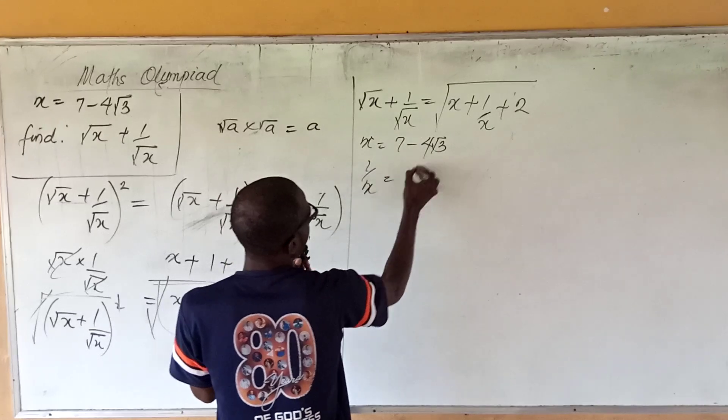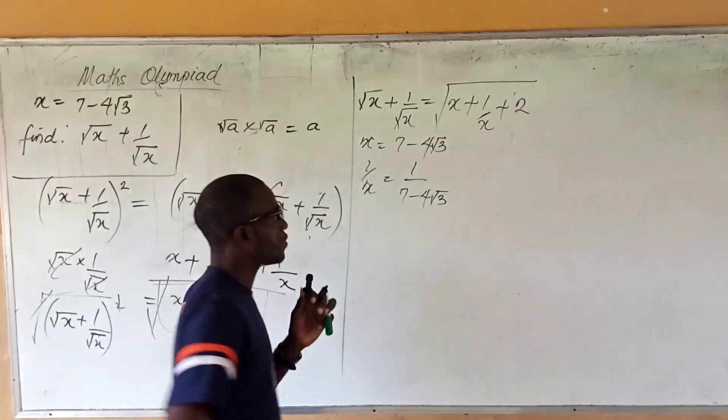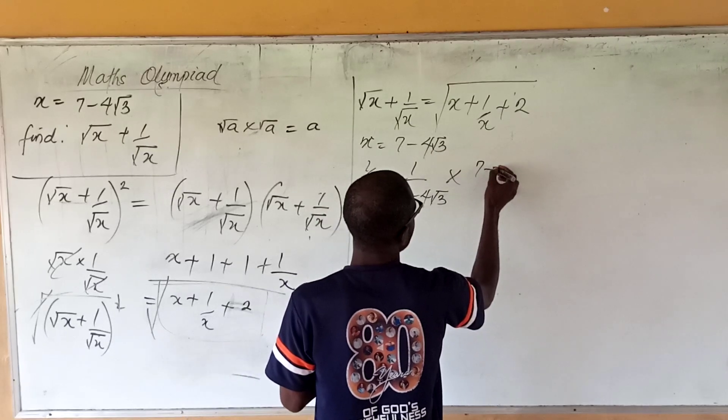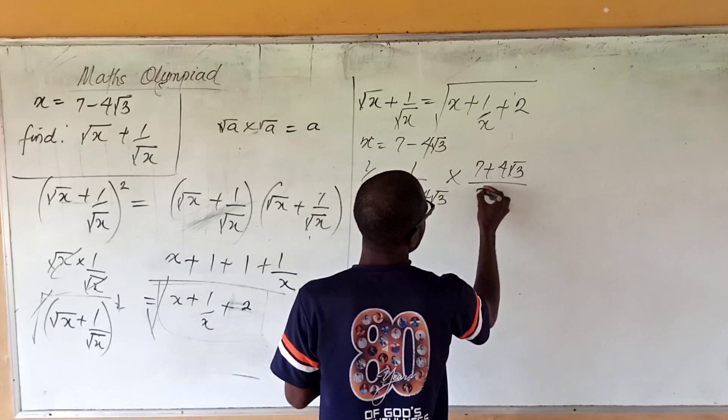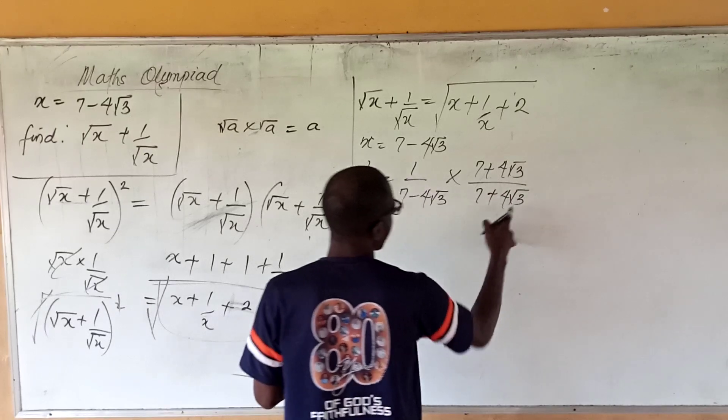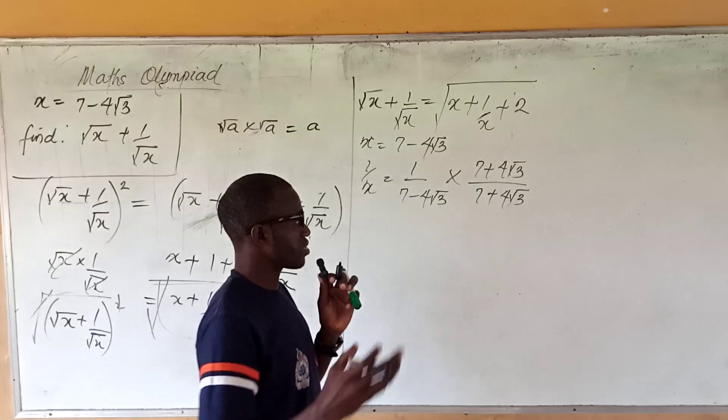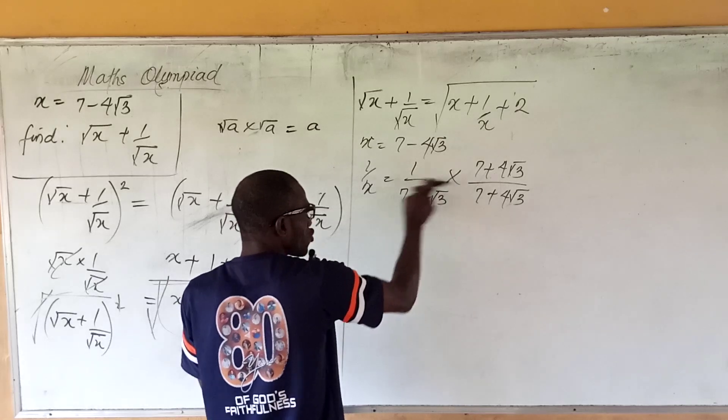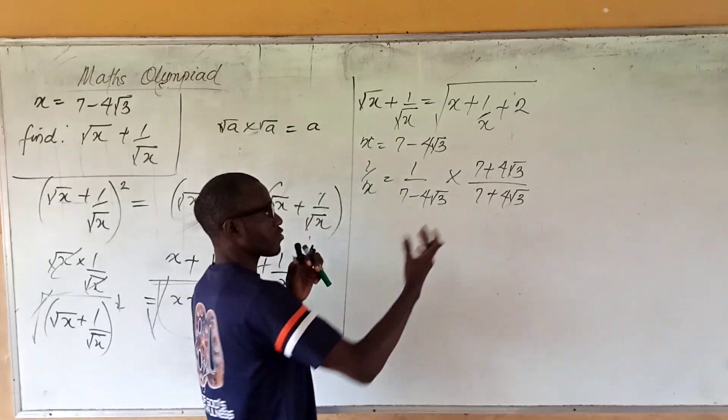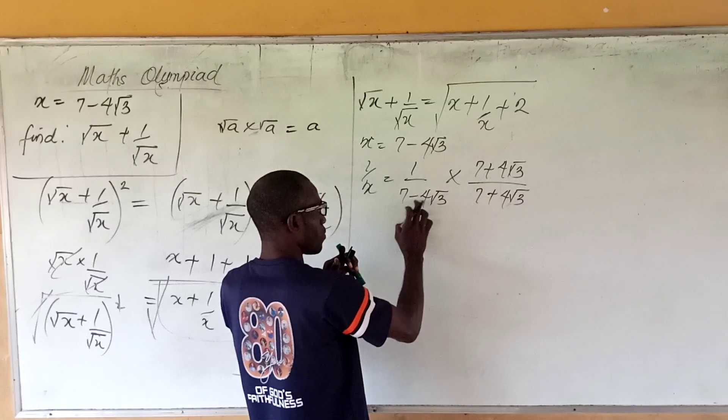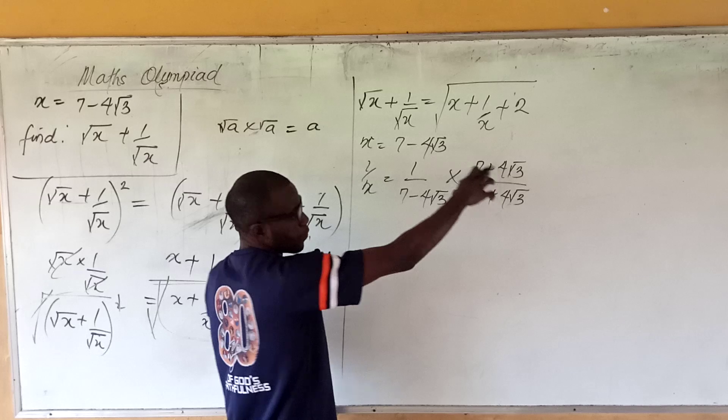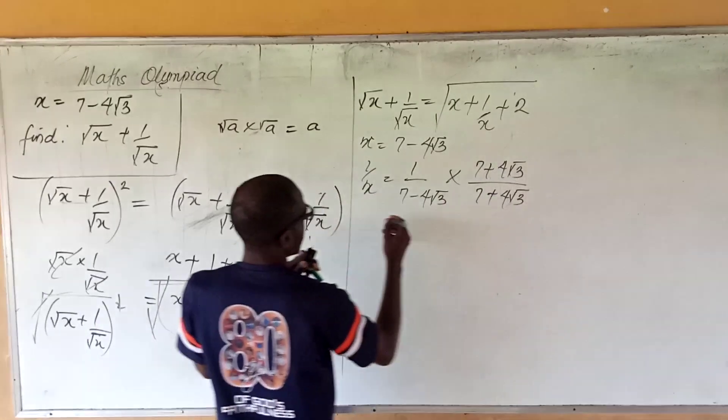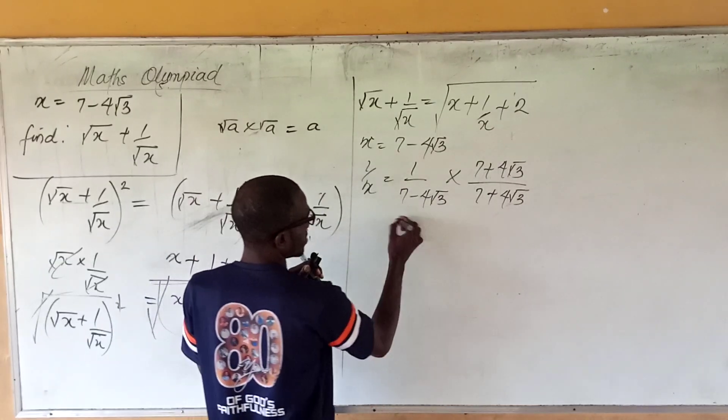So what do we do? Let's manipulate again. 1/x is equal to 1/(7 - 4√3). Now you can substitute directly but the best way to do this is to rationalize this. To rationalize any number where there's a root in the denominator, I multiply by the conjugate of the denominator. The conjugate of the denominator is basically the same number but with an opposite sign. So if it's minus here I put plus here.